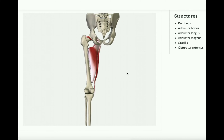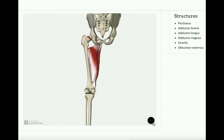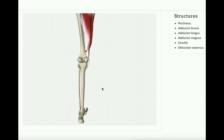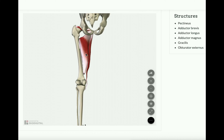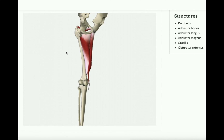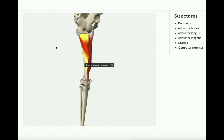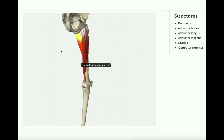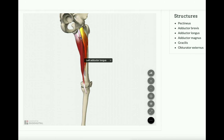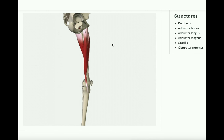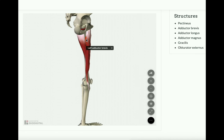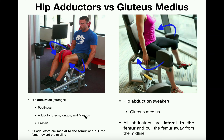Looking at the posterior aspect of the leg, we can see the hip adductors more clearly. The very large adductor magnus is the largest of all the hip adductors. The adductor longus lies a little more anterior, and the longer muscle is the gracilis. We can also see the smaller adductor brevis. When you see terms like brevis, longus, or magnus: magnus means largest, longus means longer, and brevis means shorter — from the word brevity. All of these muscles facilitate hip adduction.